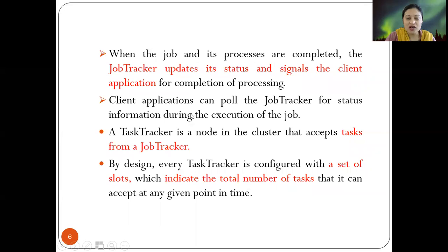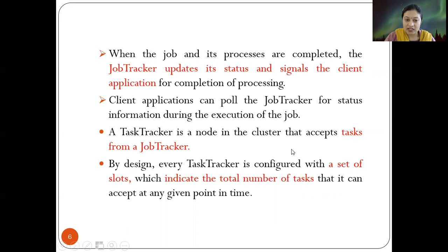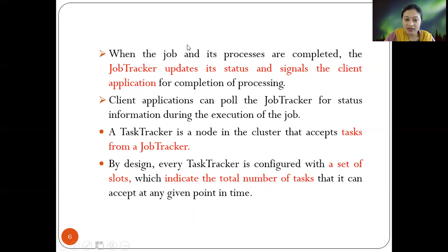When the job and its processes are completed, the job tracker updates its status and signals the client application. As tasks are done, feedback is given to the job tracker and then to the client application, since the client is the origin of the job. Client applications can also poll the job tracker for status information during execution, as status and health are always important when executing jobs and tasks.